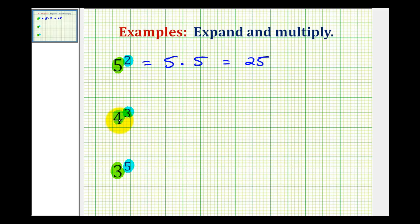The second example we can read four to the third power, four to the third, or even four cubed. And here, since the exponent is three, we're going to be multiplying three factors of four. So we'll have four times four times four. Well, four times four is sixteen, and sixteen times four is sixty-four.